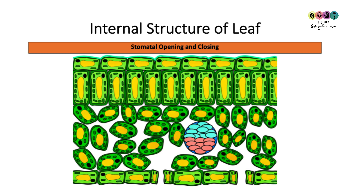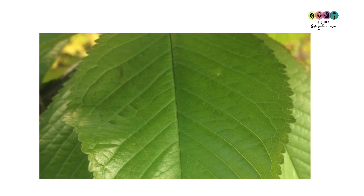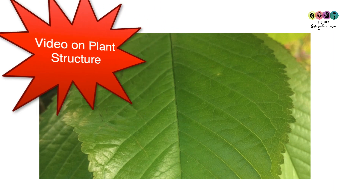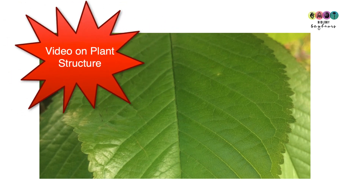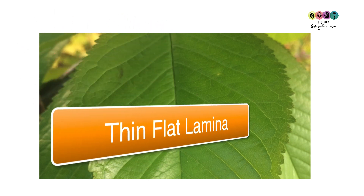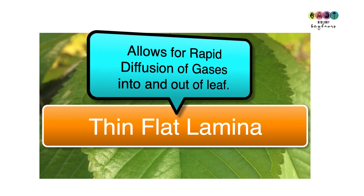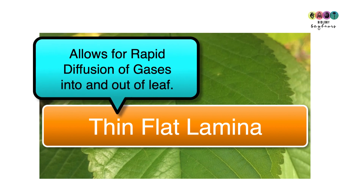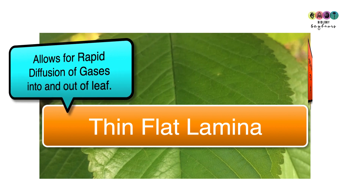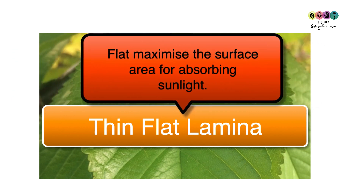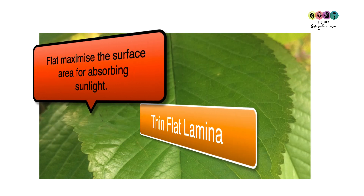This video covers the internal structure of the leaf and will include stomatal opening and closing. To begin with, let's look at the external structure. The leaf is a thin flat lamina — being thin enables gases to diffuse in and out very quickly, and being flat means it's well adapted to absorbing light energy to maximise photosynthesis.